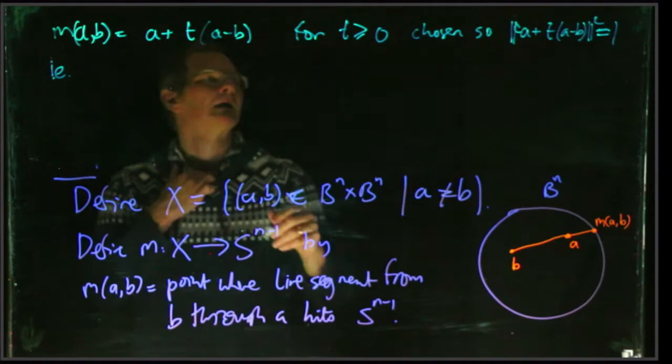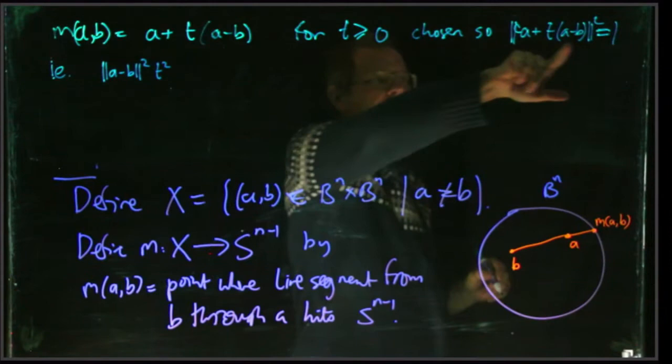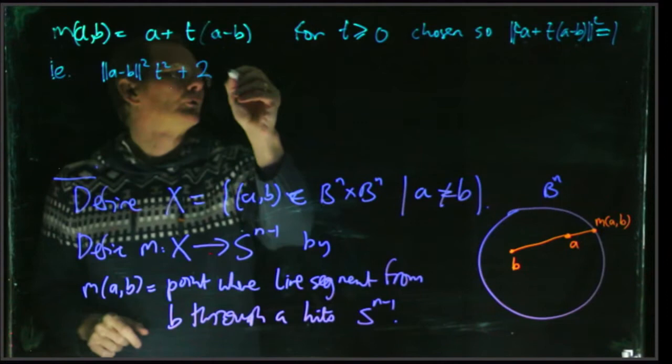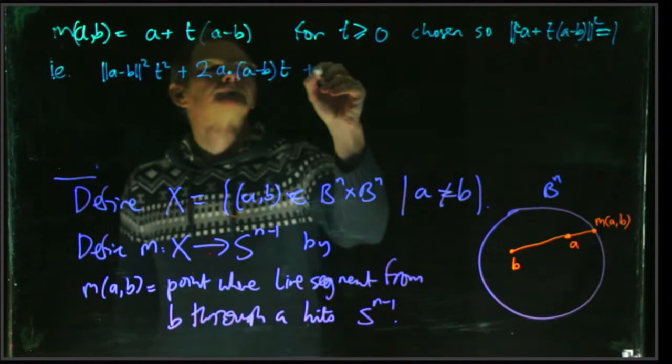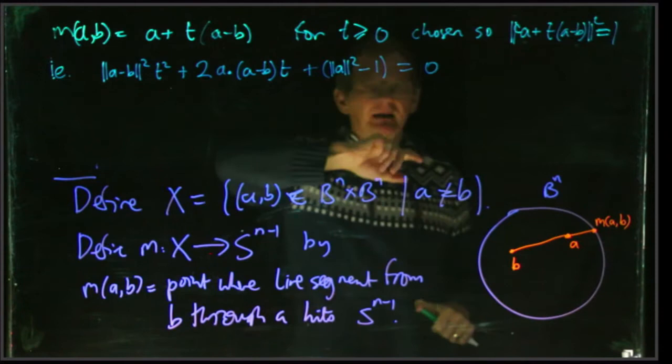We've got the norm |a - b|² t² squared, just expanding out the dot product of this vector with itself. And then you get two cross terms. We take the dot product of this one with this one. So that's 2a·(a - b)t. And then your constant term is norm of a squared, but then you've got a 1 on the other side.